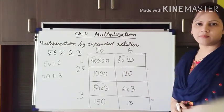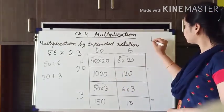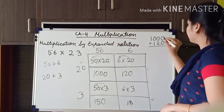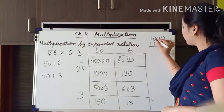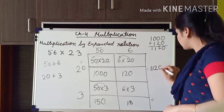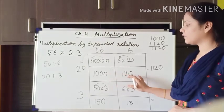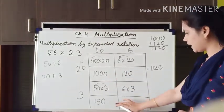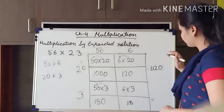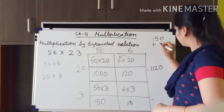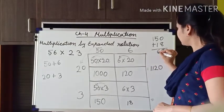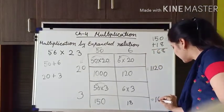We have to add these numbers. First we add 1000 plus 120: 0 plus 0 is 0, 2 plus 0 is 2, 1 plus 0 is 1, and then 1 — giving 1120. Now we also add the other two numbers, 150 plus 18: 8 plus 0 is 8, 1 plus 5 is 6, and carry the 1 — giving 168.